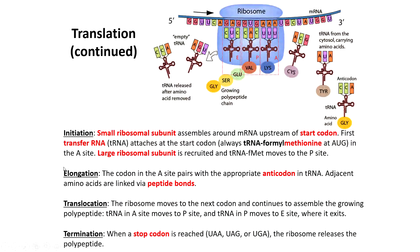There are three major stages: initiation, elongation (which includes translocation), and termination. During initiation, the small ribosomal subunit will assemble around the messenger RNA molecule somewhere upstream of the start codon — meaning towards the 5' end, before the start codon. The first transfer RNA will attach with the start codon with the small ribosomal subunit, and this is always a tRNA that carries a methionine. tRNAs are specialized RNA molecules that always take a clover shape with an anticodon at one end that is complementary to a codon in the RNA, and an amino acid at the other end that corresponds to that codon.